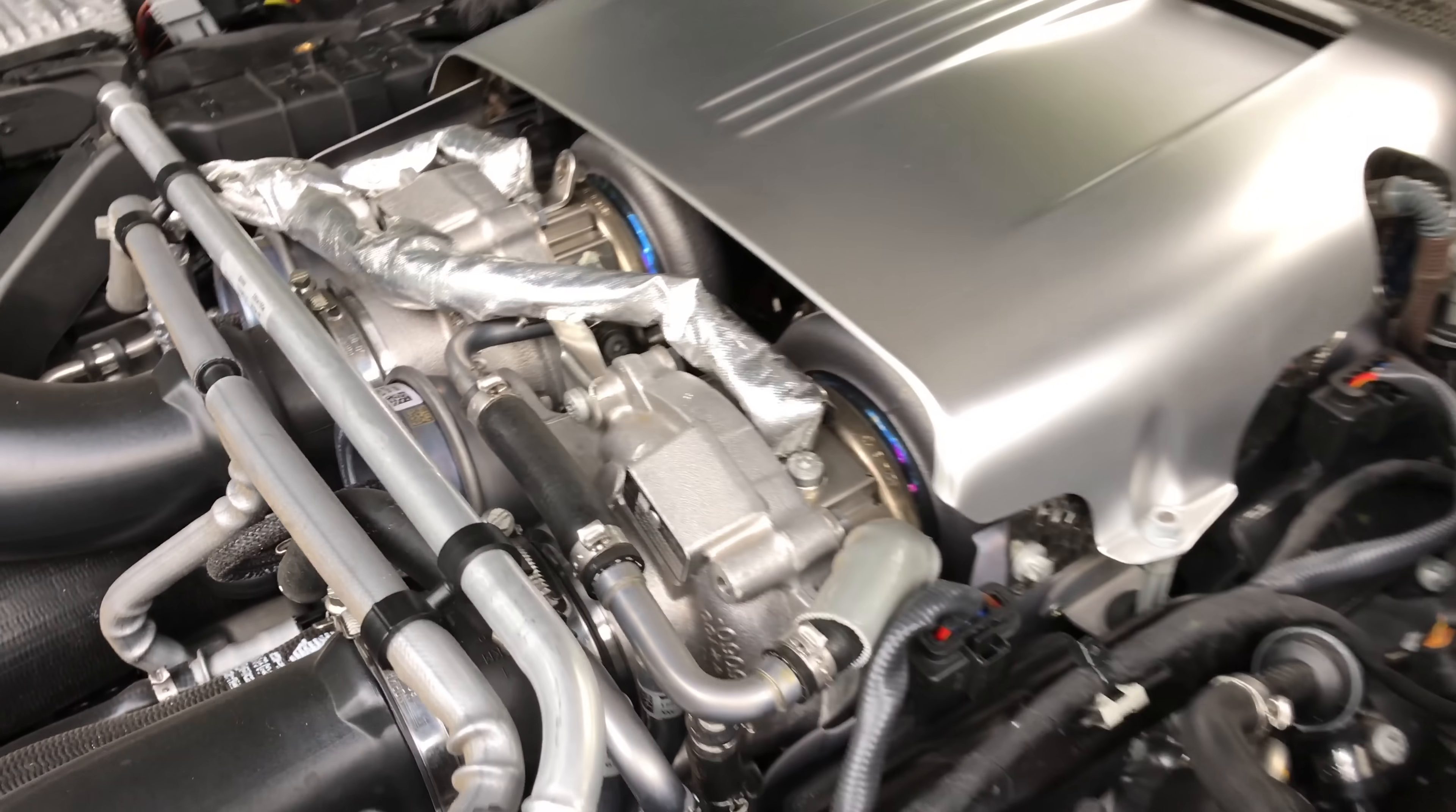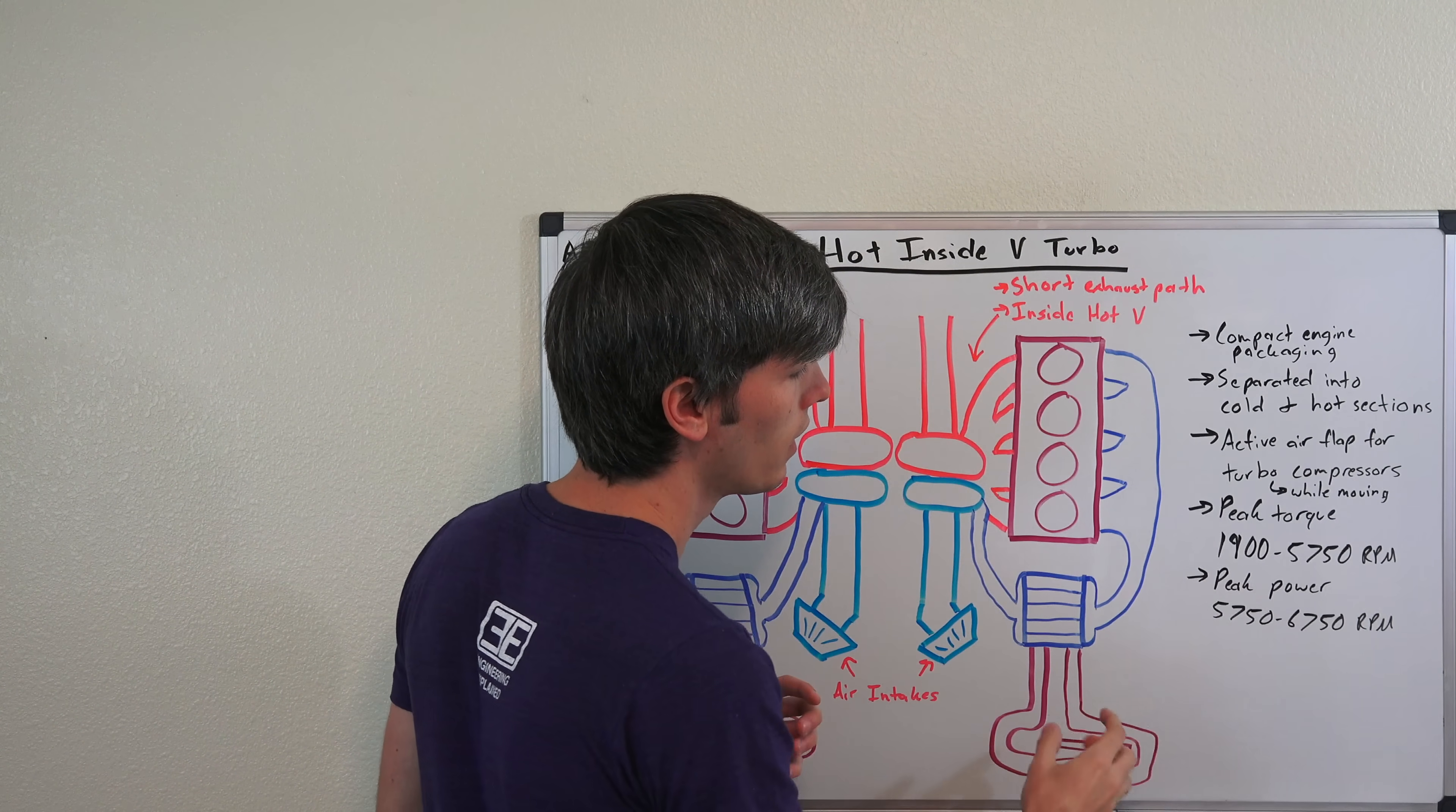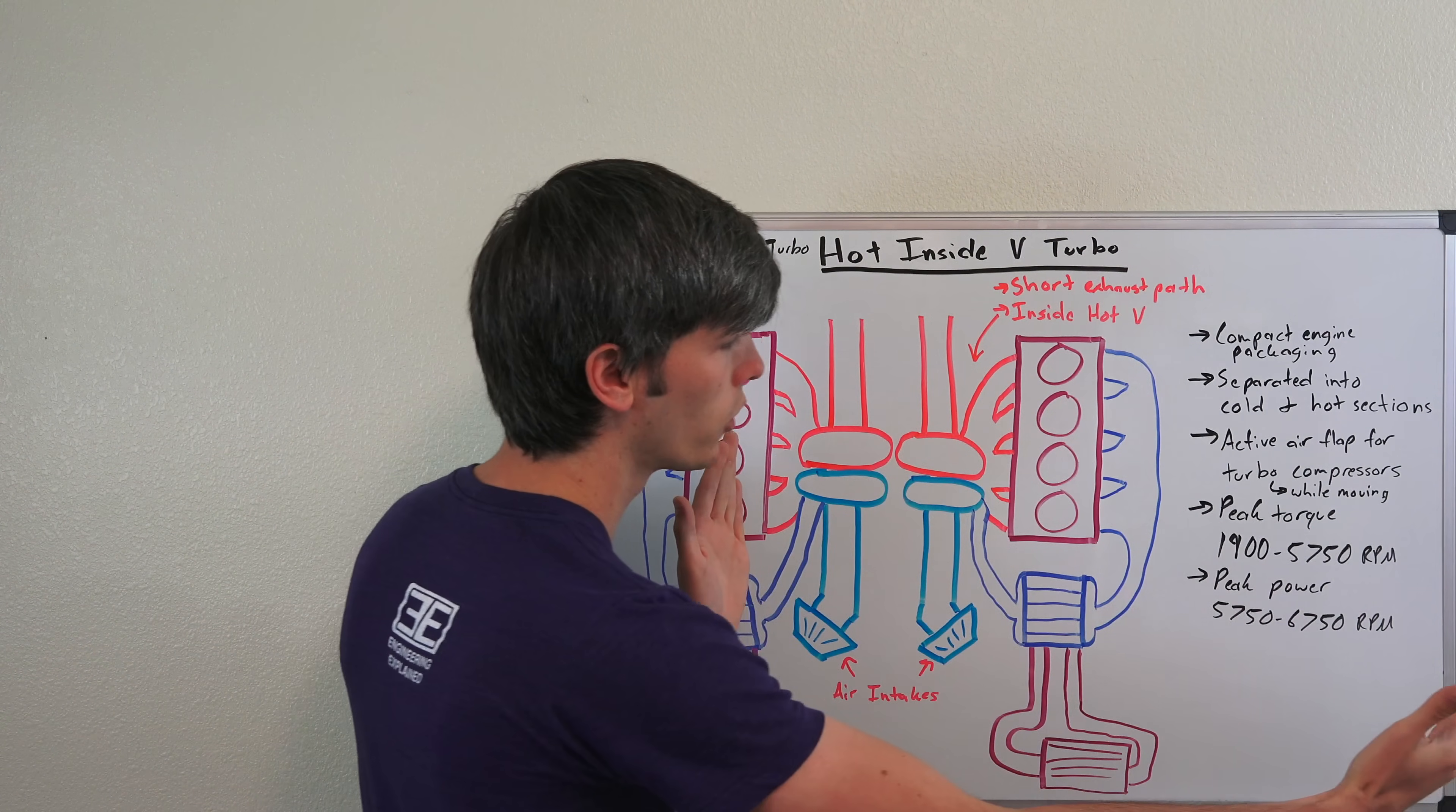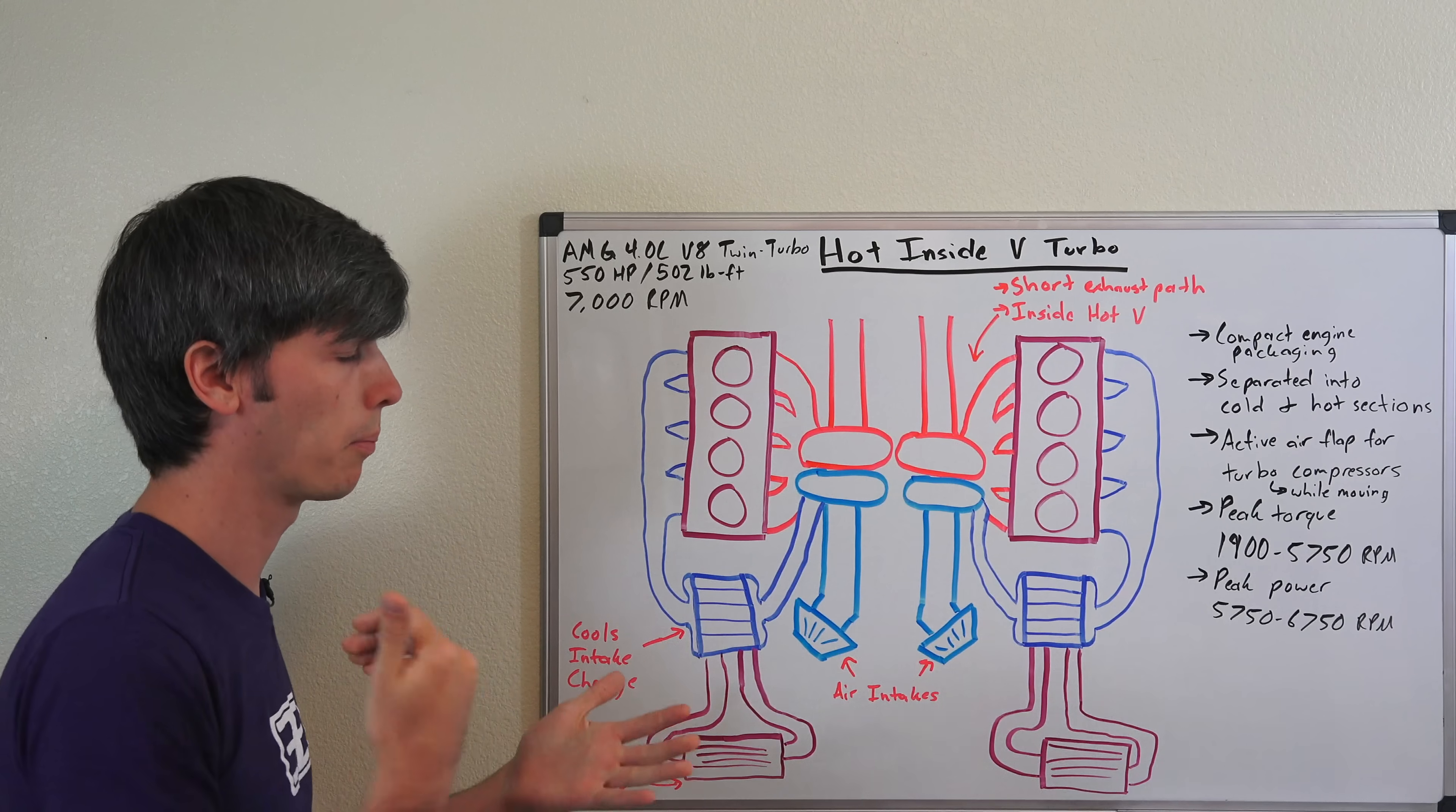You actually can rev this all the way out to the 7000 rpm redline because you're getting peak power all the way to 6750. From a gearing standpoint it makes the most sense to be in the lowest gear possible and as high of power as possible. Very cool that it has a huge, very usable engine rev range. Pretty much anywhere above 1900 you want to be in the lowest gear as possible to put down the most torque. Very cool how they've set that up.